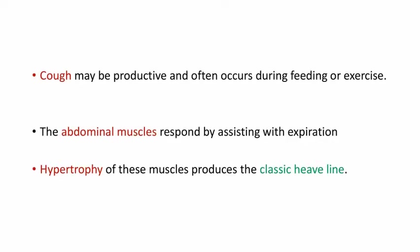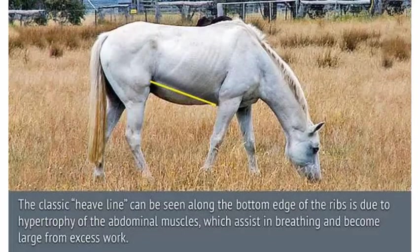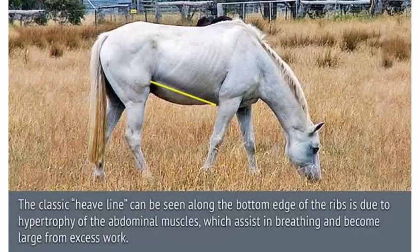This is a picture of the classic heave line, which can be seen along the bottom edge of the ribs, due to hypertrophy of the abdominal muscles which assist in breathing and become enlarged from excess work. In this picture, it is represented with the yellow line — you can see the classic heave line here along the bottom edge of the ribs.